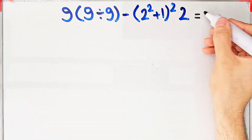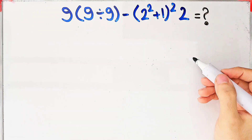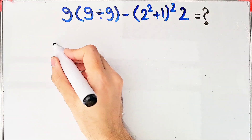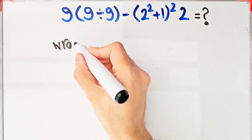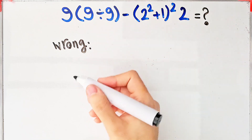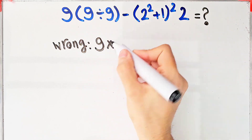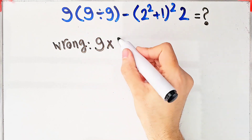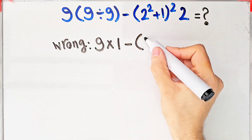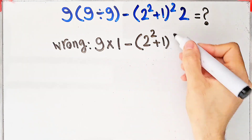Some people solve this question like this: they start from the left and don't pay attention to the priority of the mathematical operations. Nine times nine divided by nine, which equals one, then minus two to the power of two plus one, then all of them to the power of two, then times two.